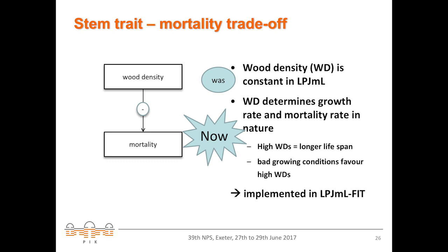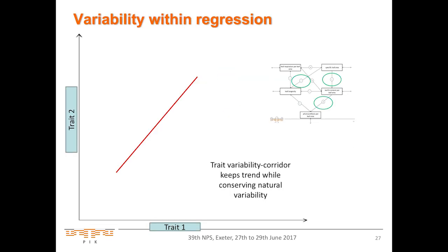We also recognised a stem-trait mortality trade-off. In the early version, wood density was a constant value for all PFTs. We have now made this variable and related the growth rate and mortality rate to it, determined by growth efficiency. Trees with high wood density have a longer lifespan and should be more selected in regions with poor growing conditions. We have this implemented.